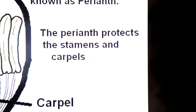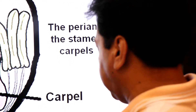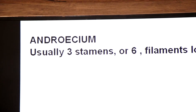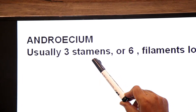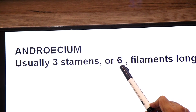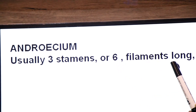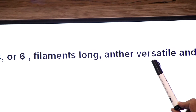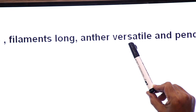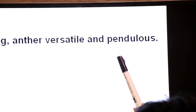The function of perianth (lodicules) is to protect the stamens and carpel. Usually 3 stamens are found — free, polyandrous. Sometimes there is an additional whorl with 3 stamens in one whorl and 3 in another, giving 3+3=6 stamens. If the anther swings freely, it is called a versatile anther — pendulous, bending from the point of origin and swinging freely.